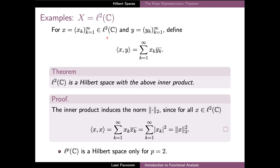The verification of the axioms of the inner product can be done in an analogous manner as in the case of the Lebesgue space L2, and it is presented in detail in the lecture notes. In the case of this space we can deduce that it is a well-defined inner product space. Moreover, since the inner product defined here turns out to induce the natural 2-norm on the space, we can see that small l2 is in fact a Hilbert space when equipped with this inner product. Similarly as in the case of Lebesgue spaces, the space l2 is in fact the only Hilbert space among the Banach spaces lp of p-summable sequences with different exponents p.